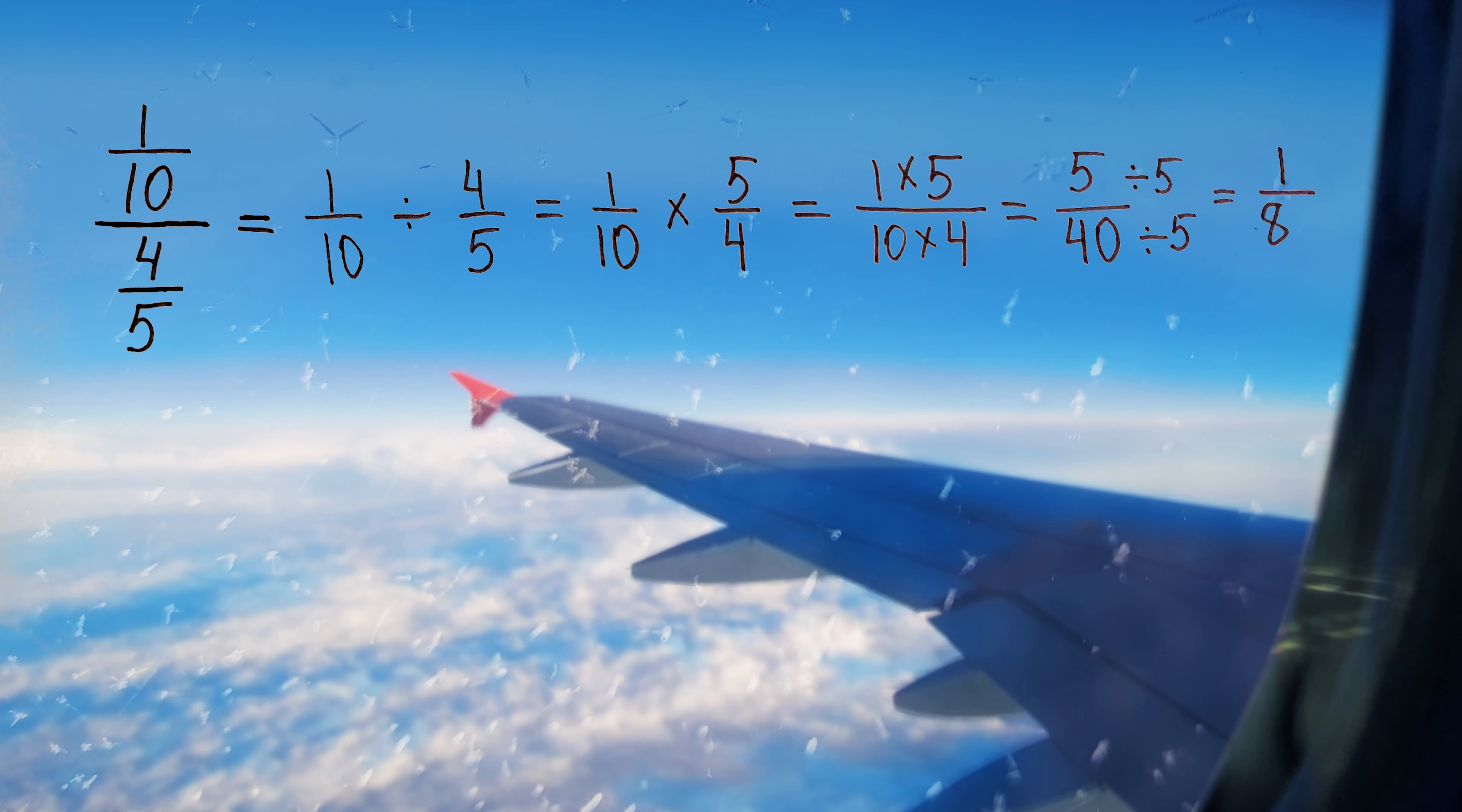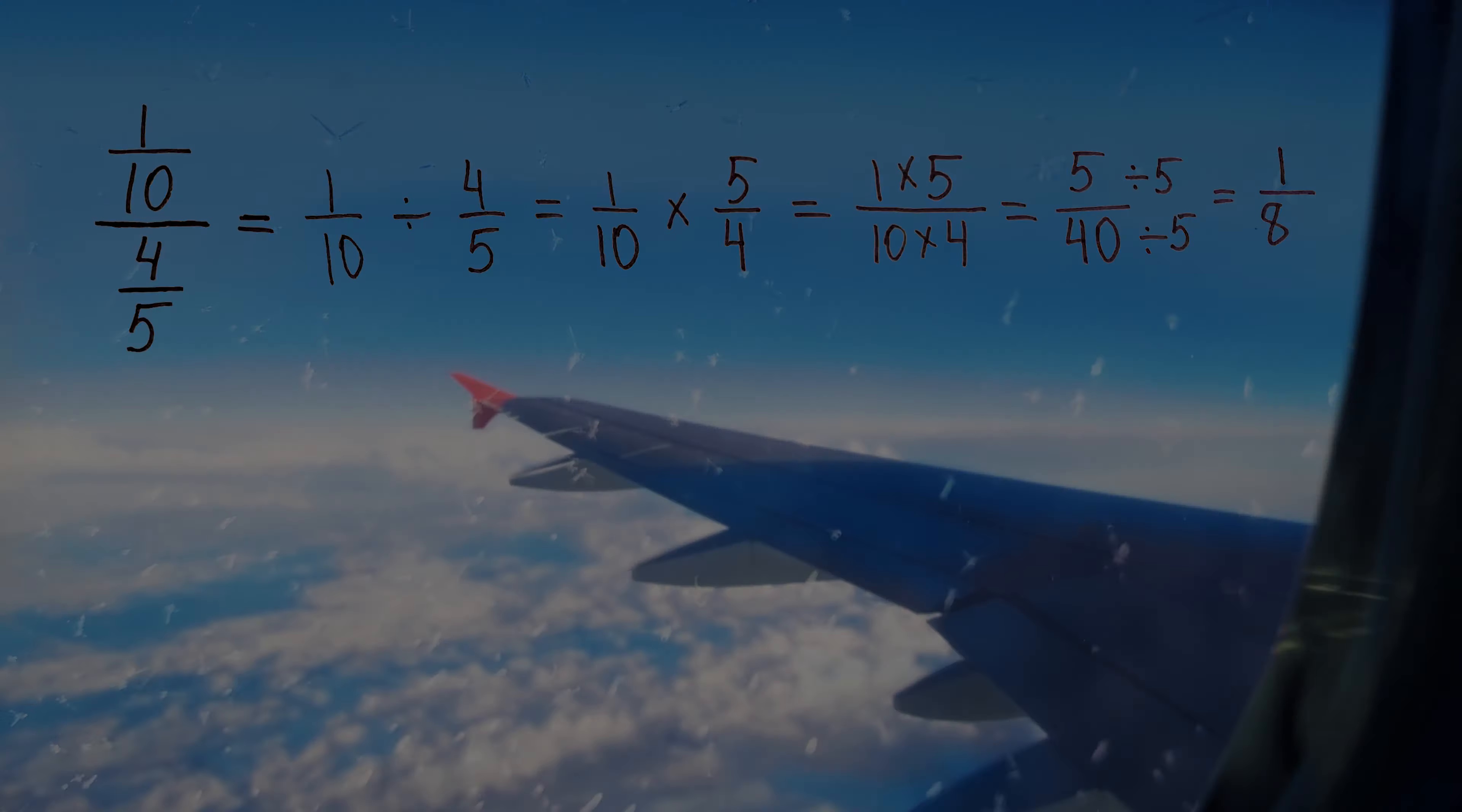One times five is five. Ten times four is forty. Very good. We need to reduce this fraction because five and forty can be divided by five. So we are dividing numerator by five and denominator by five. Five divided by five is one. Forty divided by five is eight. Very good.